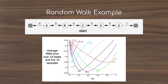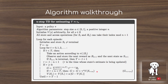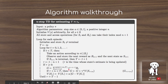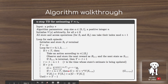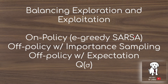The n-step TD algorithm for estimating state values under a given policy uses the discount factor gamma raised to the power of how many steps ahead we are, multiplied by the rewards experienced, summing these up, then bootstrapping the update using the value of the state we end up in. We then compute the target — return minus original estimate — to update the value estimate of that state.